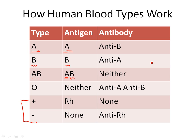For example, I'm an A positive blood type. That means I have antigen A and I also have RH antigen. So what's normal and what should be in me are A's and RH's. Nothing else should be in me, because anything else that you put in me I don't already have.